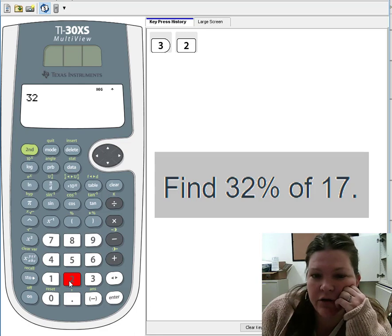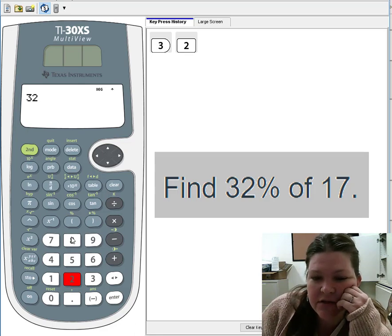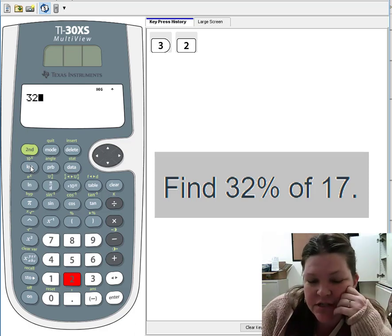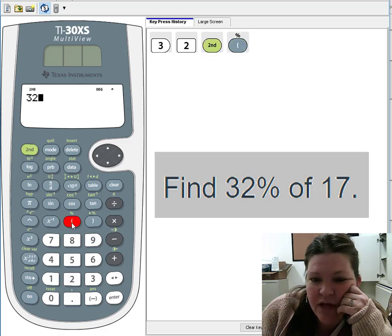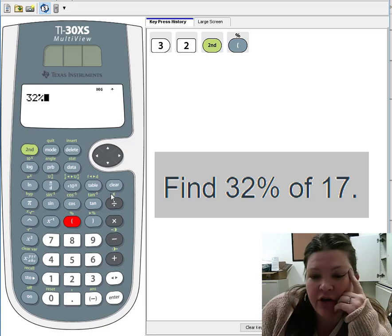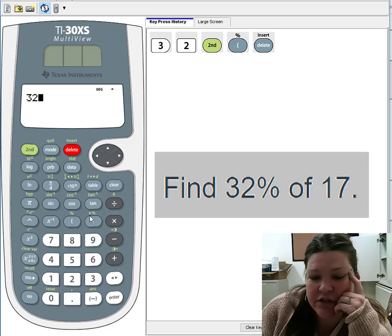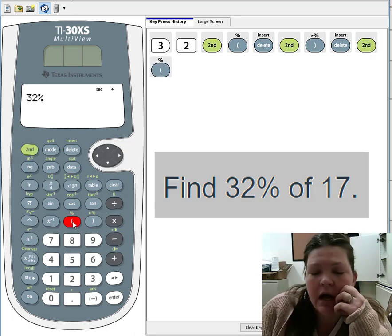So if I want to find 32% of 17, I can just put in 32. Now you can't just put in 32 or you're going to be taking 32 times 17, that's a whole lot of 17. You want 32% of 17. Now if you forget your computations when taking your test, that's okay, there's a percent button on the calculator. It's right here above the open parentheses. Notice that it's in green, so when you want something in green you have to press the second button.